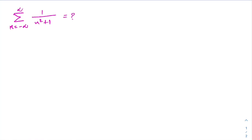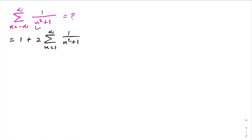As a first step, if we plug in n equals 0, we get 1 over 1, which is 1. So we can write our infinite series as 1 plus, and according to symmetry, 2 times the sum from n equals 1 to infinity of 1 over n squared plus 1.